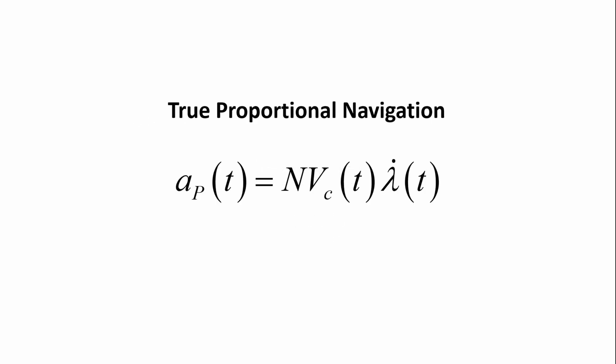We've looked at true proportional navigation. It was the product of a proportional gain, closing velocity, and line of sight rate.